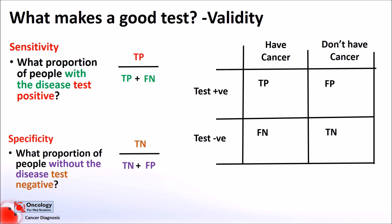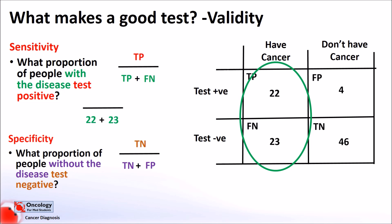I'll give an example with numbers. Here we're talking about a screening test for prostate cancer — the PSA blood test. To work out the sensitivity, which is the ability of the test to correctly identify people with the disease, we take the number of people with the disease — true positives and false negatives — which is 23 plus 22, equalling 55, and we divide the number of true positives, 22, by this number. This comes out as 44%. This means 44% of people with the disease will be correctly identified by the test with a positive result. A low sensitivity like this suggests that the test isn't great at identifying people with the disease, meaning lots of people with the disease will get missed with a false negative result and will not go on to have further testing.